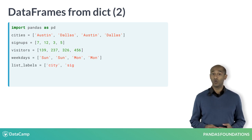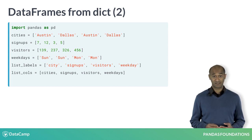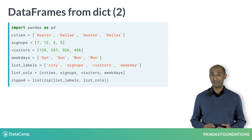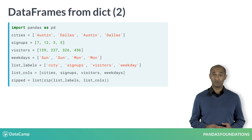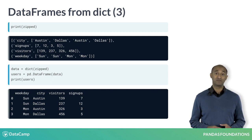We can define two other lists: list labels, containing the column labels, and list cols, containing the column entries for each column. Notice, list cols is a list of lists. Using Python's list and zip functions, we construct a list called zipped of tuples — column names and columns — to feed to the dict command. Calling dict on zipped creates a dict called data, which is then used with pd.DataFrame to build the data frame.